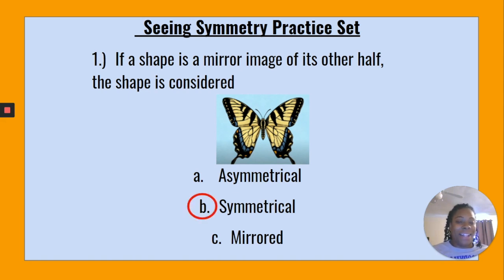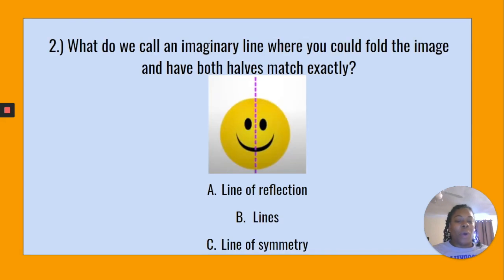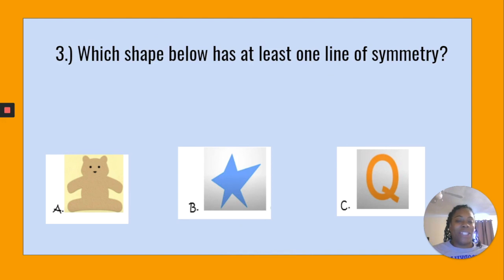Number two: What do we call an imaginary line where you could fold the image and have both halves match exactly? That answer should be C. Line of symmetry.